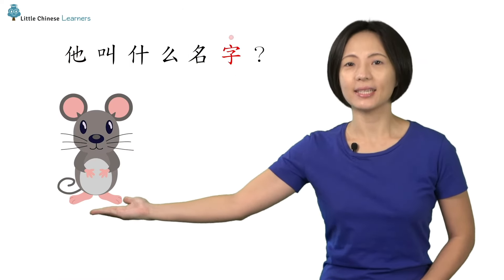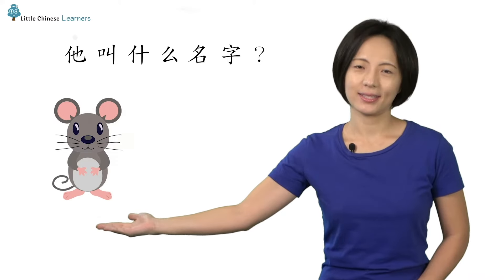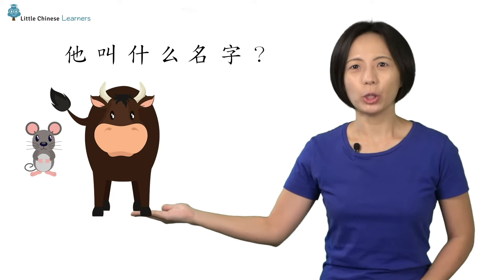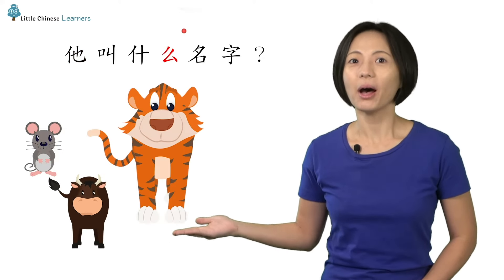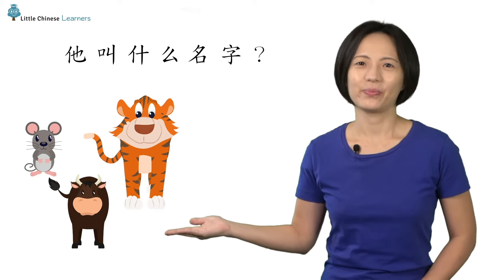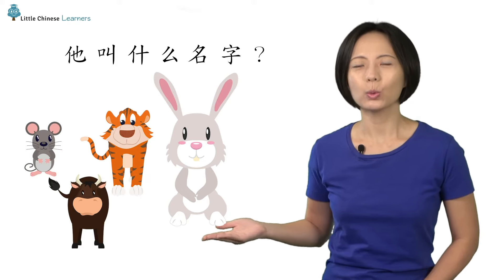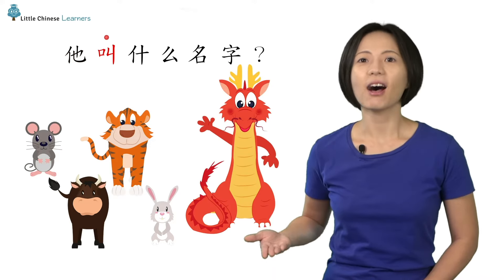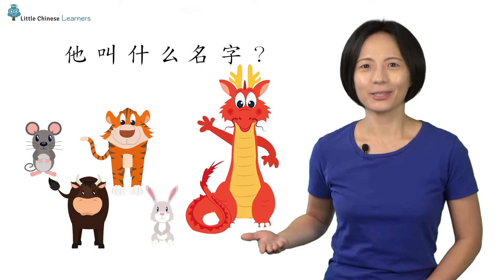他叫小鼠, he is called Little Mouse. 他叫小虎, he is called Tiger. What about this cute fairy animal? 她叫小兔, she is called Little Rabbit. And finally, 他叫小龙, he is called Little Dragon.